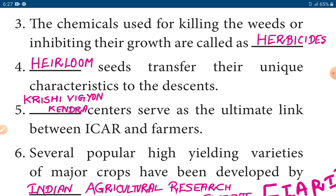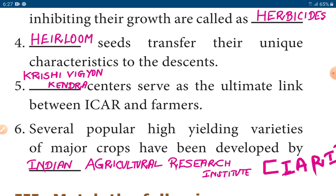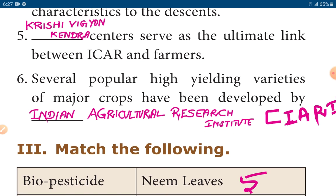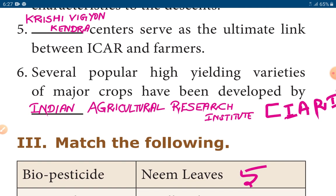Fourth one: Heirloom seeds transfer their unique characteristics to the descendants. Fifth one: Krishi Vigyan Kendra centers serve as the ultimate link between ICAR and farmers.